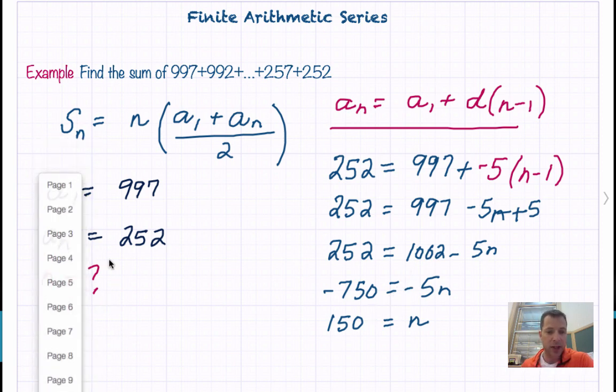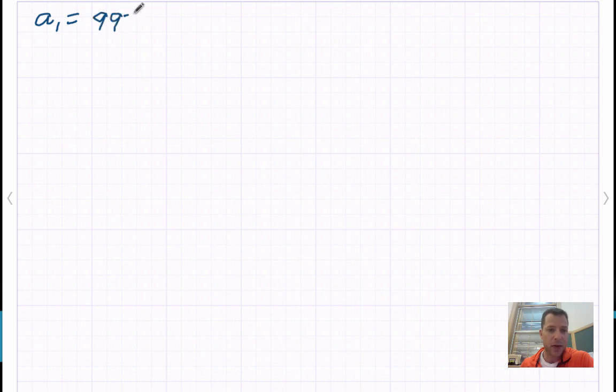So let's go on to the second page here and finish this up. We know that A sub 1 was 997, we know that A sub n was equal to 252, and now we know that n equals 150. So now we can use our formula.